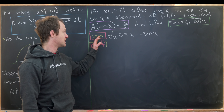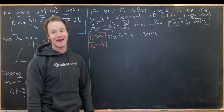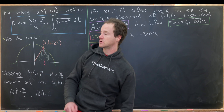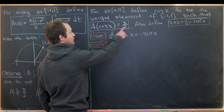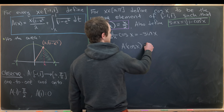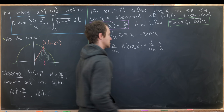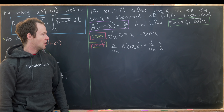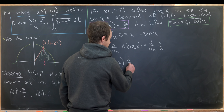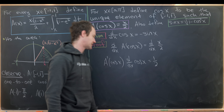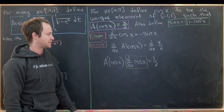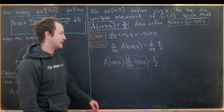We'll prove the claim that the derivative with respect to x of cosine of x equals negative sine of x, using this integral-based definition. Taking the derivative of both sides of A(cosine x) = x/2, the chain rule on the left gives: A prime evaluated at cosine of x, times the derivative of cosine of x, equals one half. We need to find A prime evaluated at cosine of x.